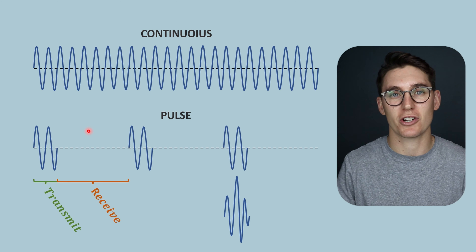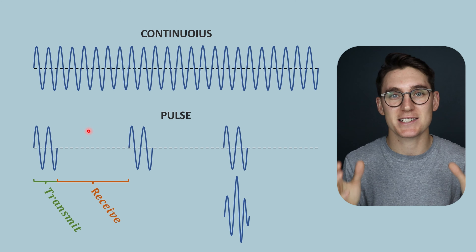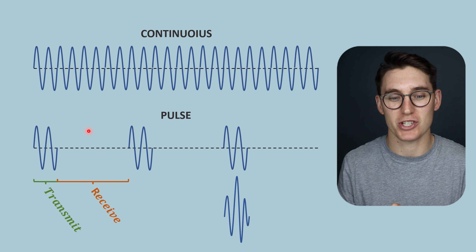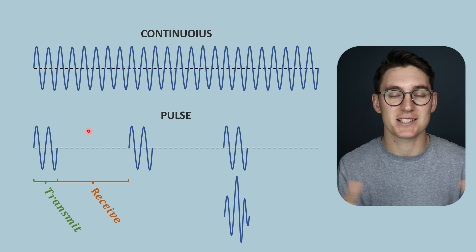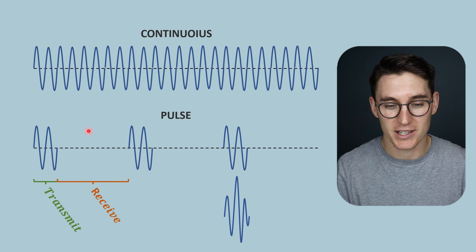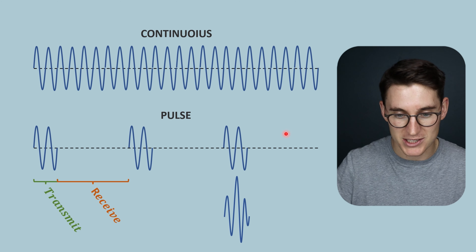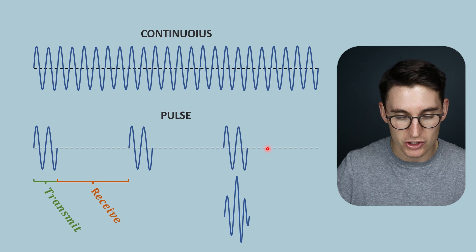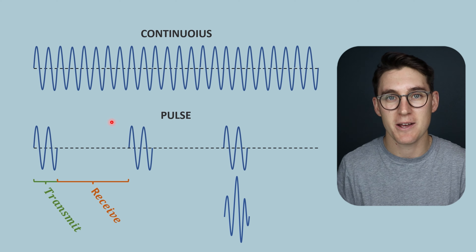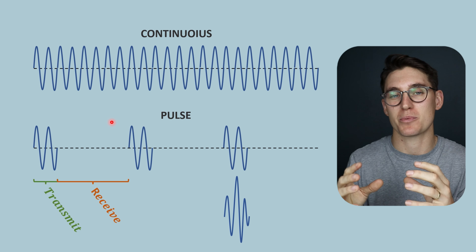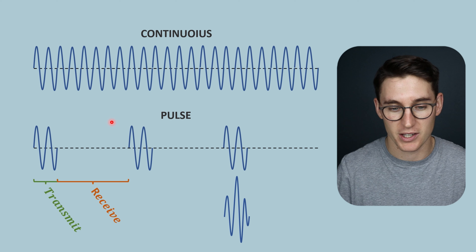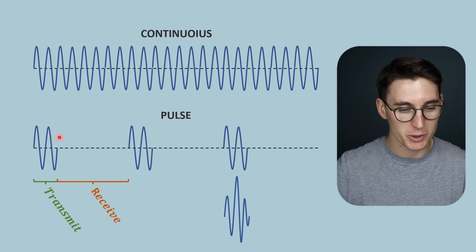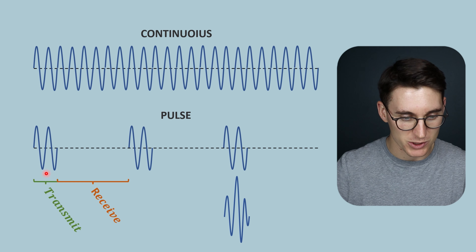Pulse echo ultrasonography is the mainstay of our diagnostic imaging and is what we're going to spend most of our time looking at in this ultrasound physics module. I want to look at five different parameters that we can use to describe this pulse echo sequence and how those parameters change depending on the depth that we are imaging in our tissues. I'm going to be representing these pulses with sine waves.